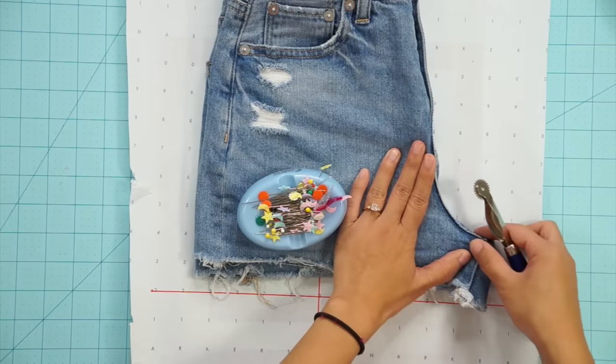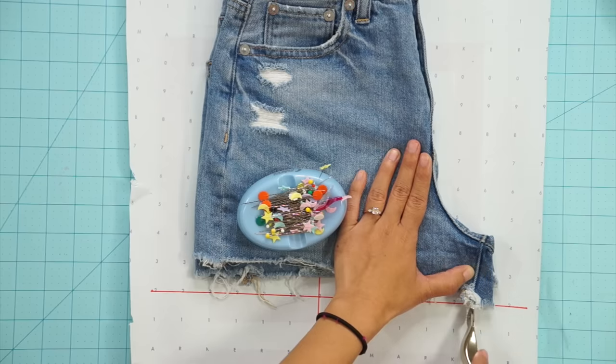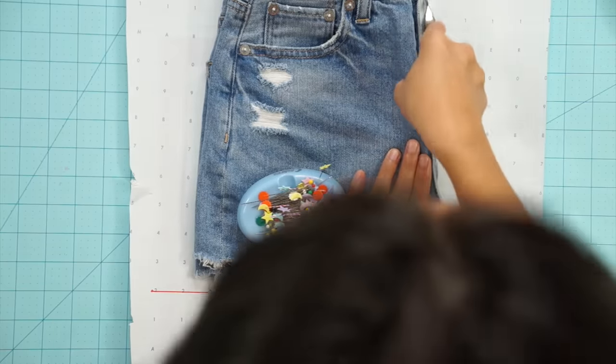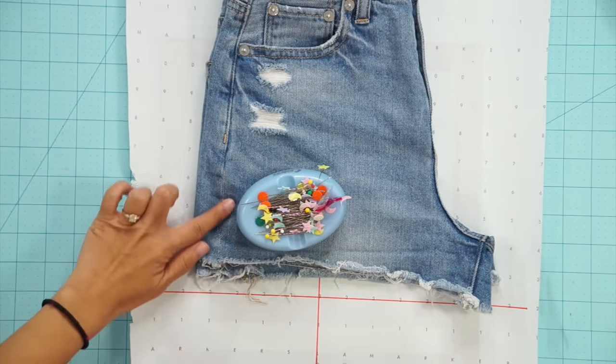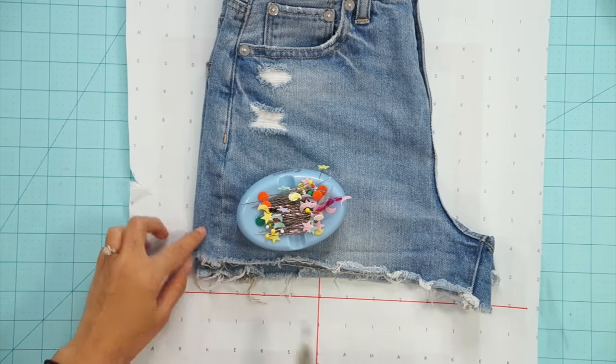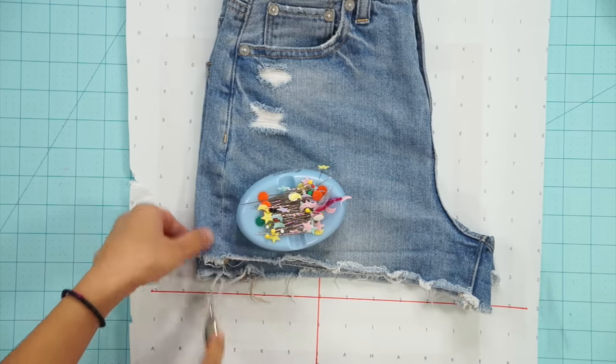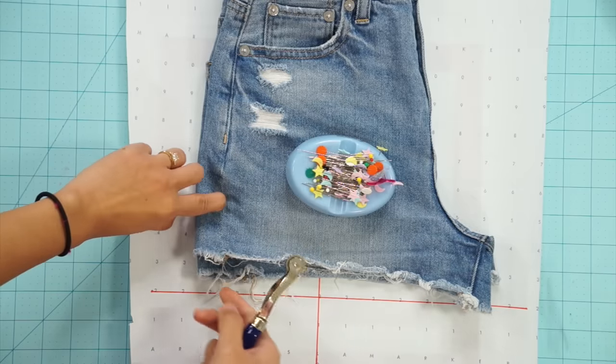Using my tracing wheel I first mark the inner leg and crotch seam. Notice how I'm marking exactly where the seam line is and not where the edge of the shorts are. The same thing applies to the side seams of the shorts. The back side overlaps to the front but I will only be marking exactly where the seam line is and not the edge of the shorts.